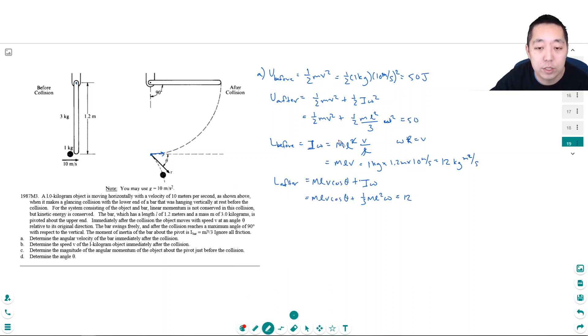My unknowns, right, so far is... Because I'm solving for omega. Let's just list all the unknowns. My unknown is omega and V. V, omega, and now theta. So now I have three unknowns and only two equations. So I still can't solve all of these equations.